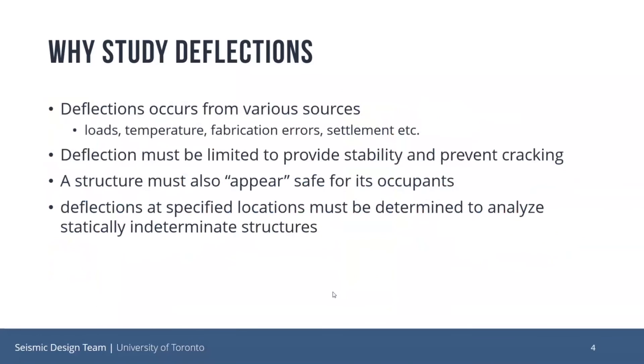So first of all, why should we study deflections? Well, deflections of structures can occur from various sources such as loads, temperature, fabrication errors, and settlement. So in design, deflections must be limited in order to provide integrity and stability of roofs and prevent cracking of the attached brittle materials such as concrete and glass. And also, a structure shouldn't vibrate or deflect so severely that it would appear unsafe for the occupants of a structure. And more importantly, deflections at specific points in the structure have to be determined if someone wants to analyze statically indeterminate structures.